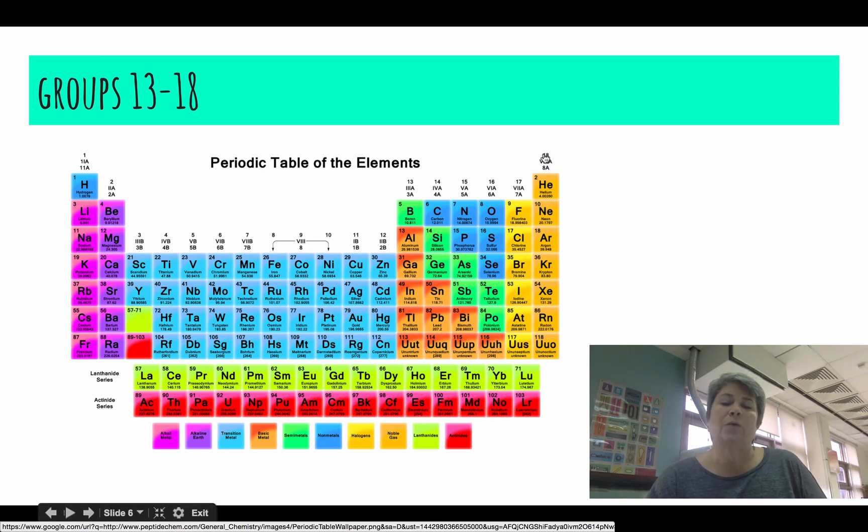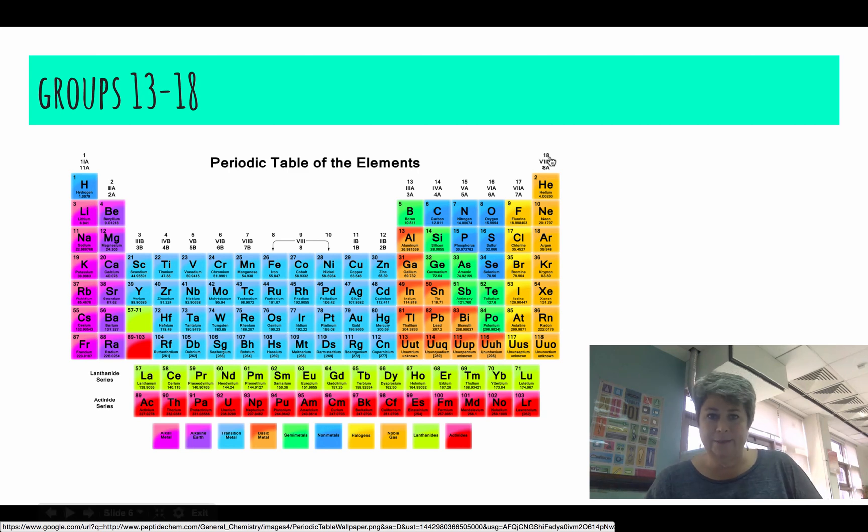group eighteen, which sometimes is called the helium or the neon family, but it's actually more commonly called the noble gases. The noble gases over here in group eighteen, they have eight valence electrons. Now, I will tell you this.